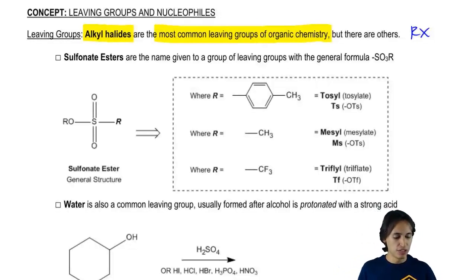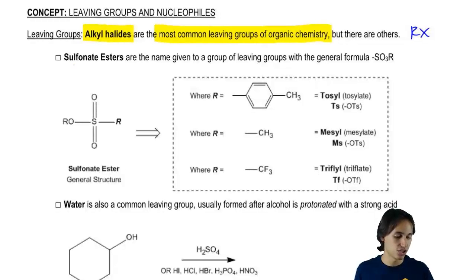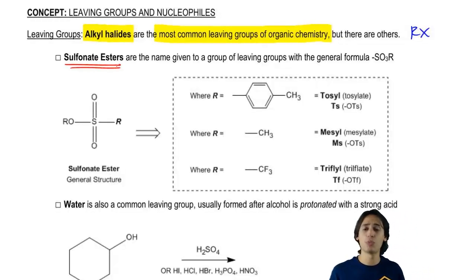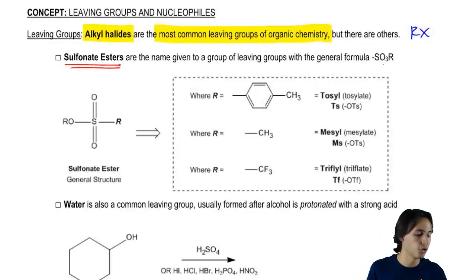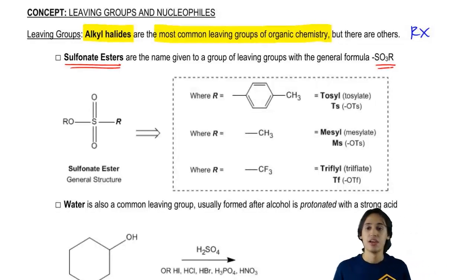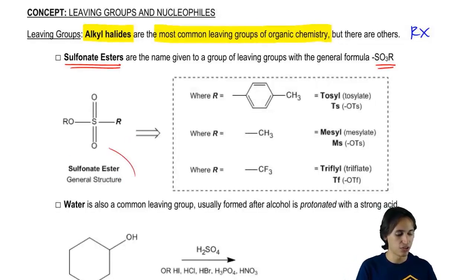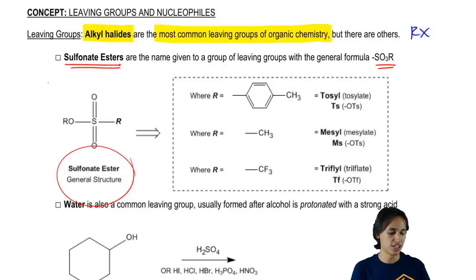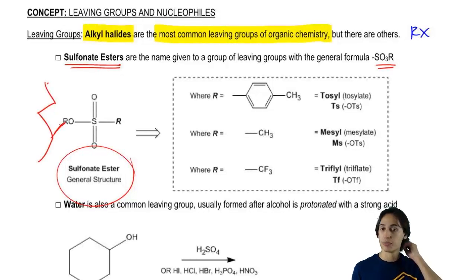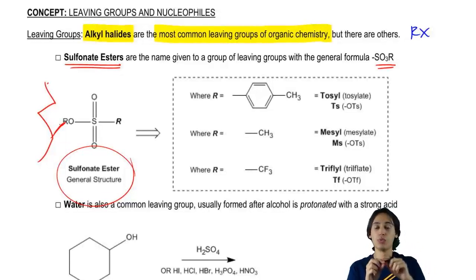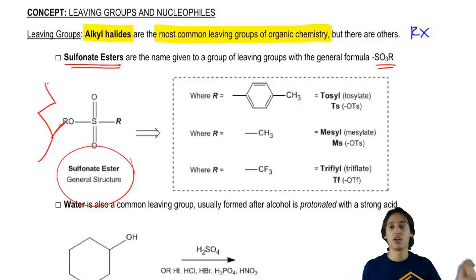It turns out there are other types of leaving groups as well. Another really common one is sulfonate esters. These don't show up as often as alkyl halides but they do show up a good amount. A sulfonate ester has the general formula SO3R. The general structure is your carbon chain attached to an O, then an S with two Os, and then an R group.